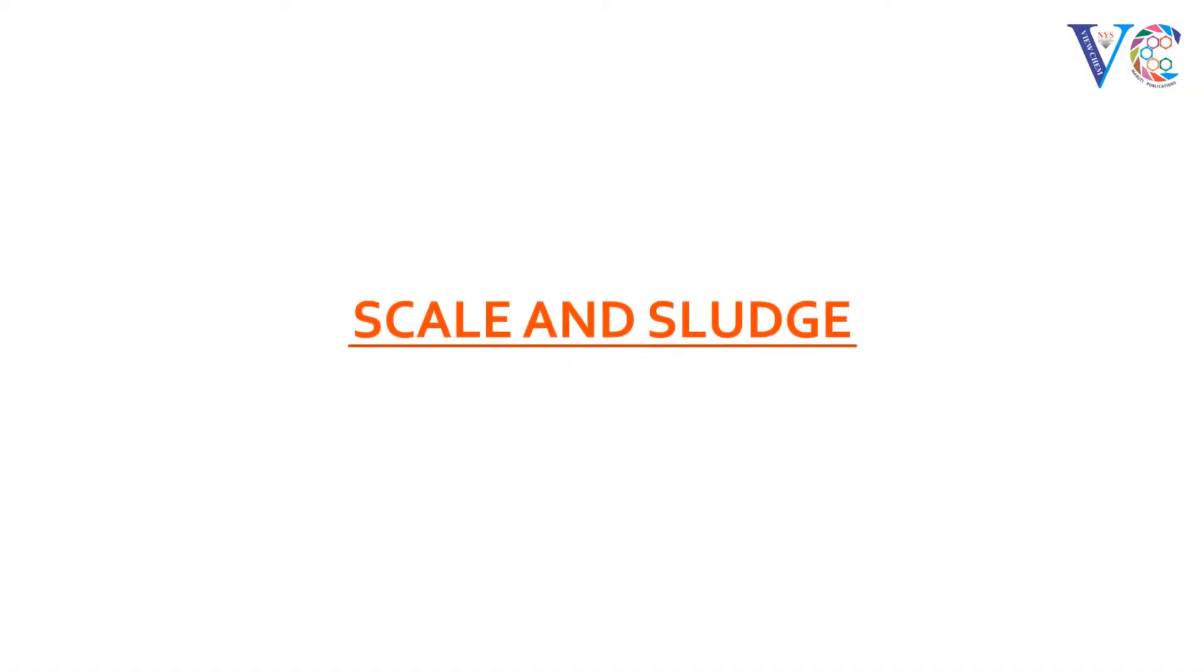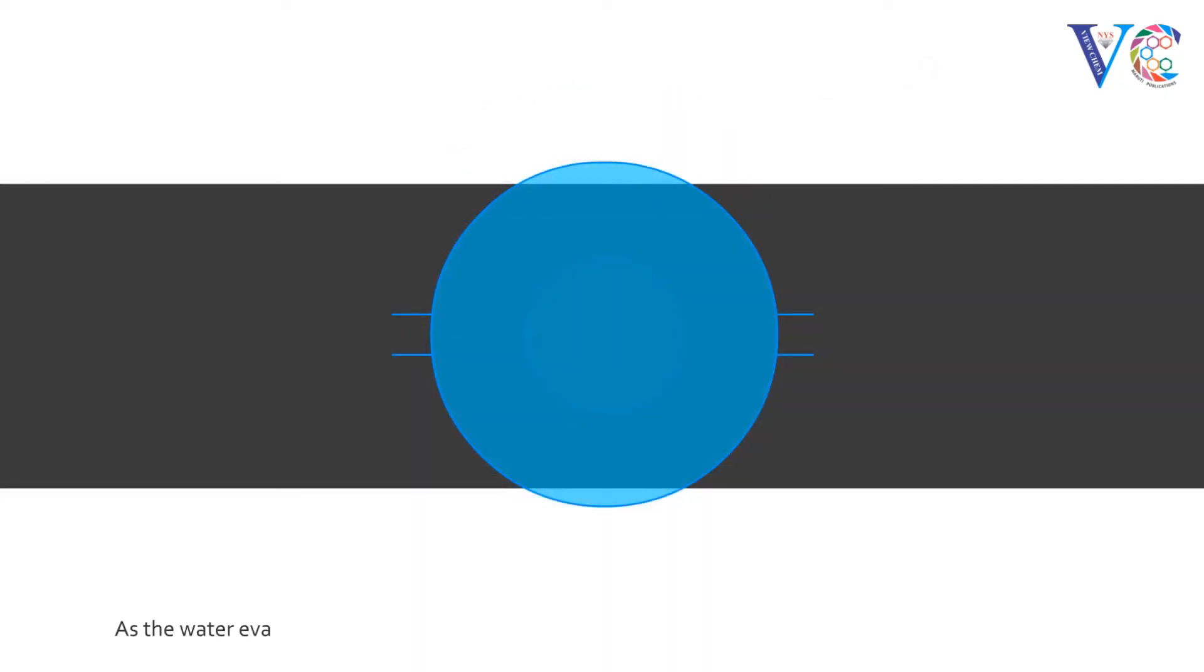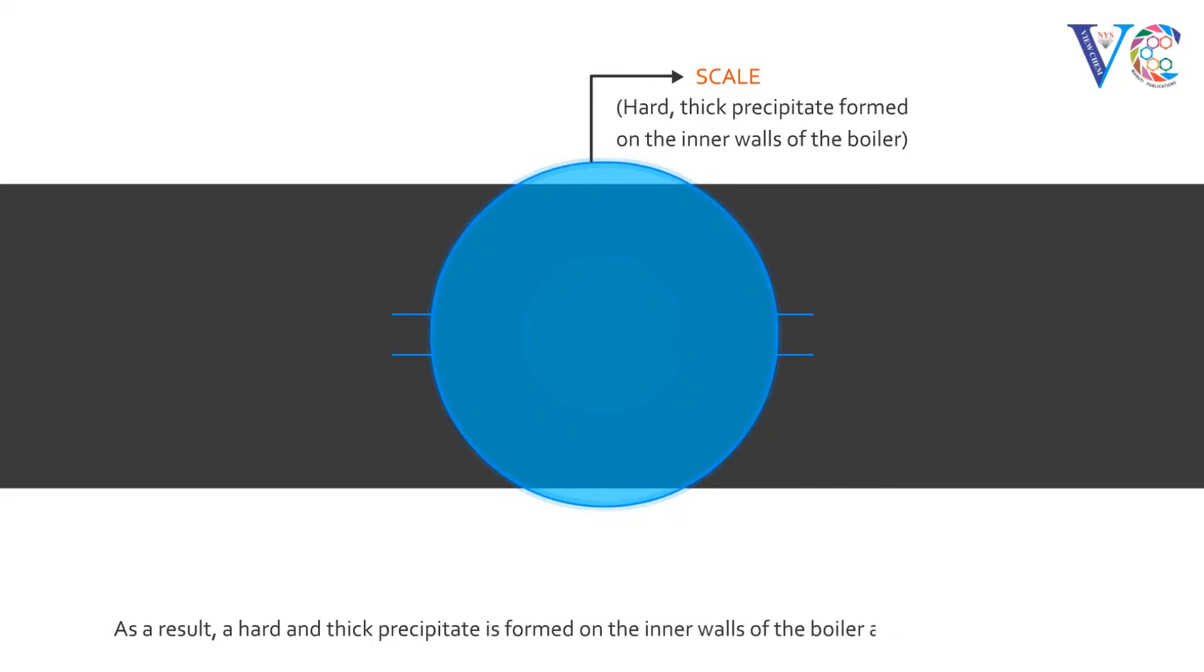Scale and sludge. When boiler is fed with hard water and heated to boil, steam is produced. As the water evaporates, the concentration of dissolved salts increases beyond the saturation point. As a result, a hard and thick precipitate is formed on the inner walls of the boiler and is called a scale.